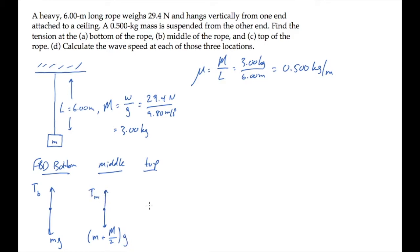At the top of the rope, the two forces are again the weight of the underlying mass, now that's the hanging mass plus the entire mass of the rope, times g, and the tension at the top acting vertically upward.